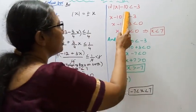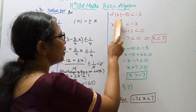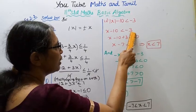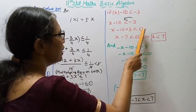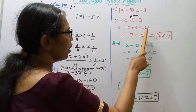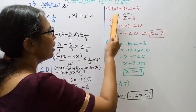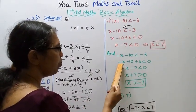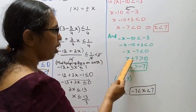Fourth subdivision: mod of (x minus 10) less than or equal to minus 3. Applying mod definition — first case, plus x: x minus 10 less than or equal to minus 3. So x minus 10 plus 3 less than 0, giving x minus 7 less than 0, so x is less than 7.